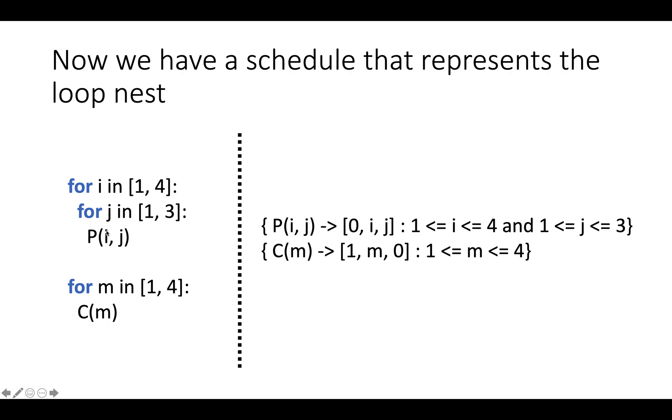So last time, we learned how to create a schedule that represents a loop nest. We took in a loop nest like the one over here, or a sequence of loop nests like the one over here, and we produced schedules that map statements in the original program to times that correspond to the execution trace of this program.